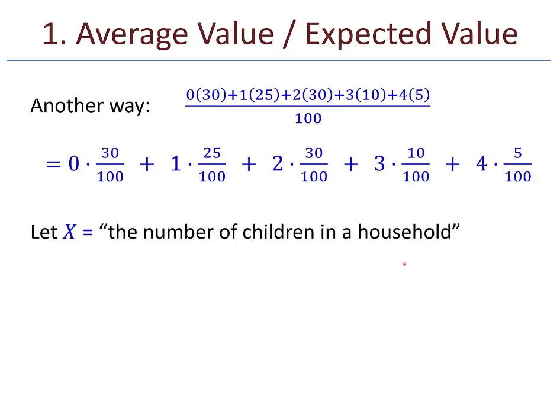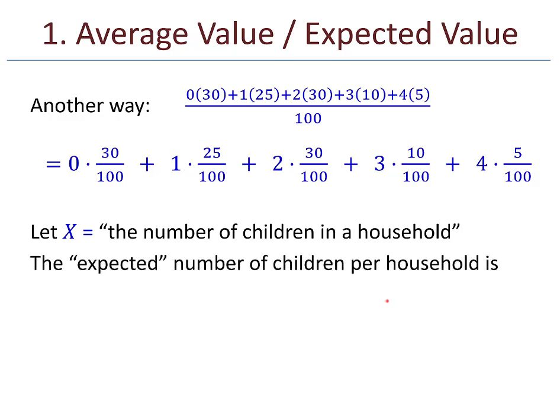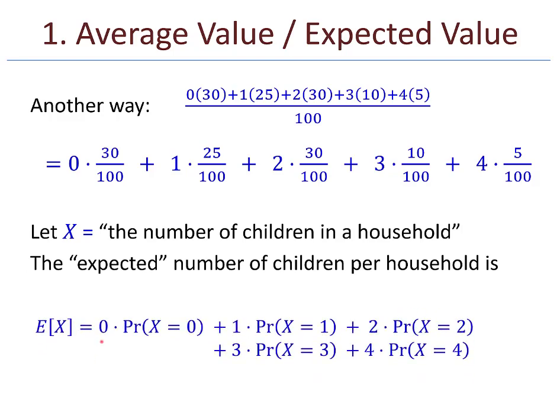Let X be the number of children in a household. X is called a random variable. There's an experiment that's done—in this case, choose one household at random—and the outcome is associated with a number. Upon choosing one of these households, I have the number of children in that household. So the expected number of children per household is 0 times Pr(X=0) plus 1 times Pr(X=1), and so on. That's exactly this computation at the top. This E[X] notation means the expected value of variable X.